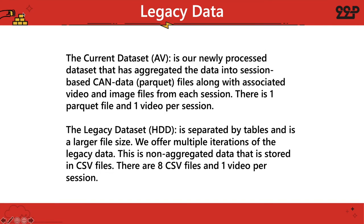Let's talk about the newest and current dataset, which we're calling the autonomous vehicle or AV data, and the difference between that and the legacy dataset, which is HDD. The current data is our newly processed dataset that has aggregated the data into session-based CAN or parquet files along with the associated video and image files from each session — one parquet file and one video file per session. The previous legacy HDD dataset is separated by tables and is a larger file size. We have multiple iterations of this legacy data; it is non-aggregated and stored in CSV files, with eight CSV files and one video file per session.